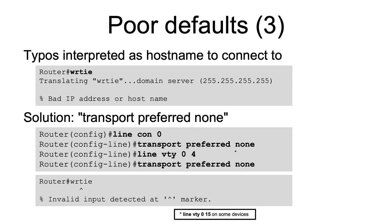The third Cisco default that we'll be talking about is that typos are interpreted as host names to connect to. A very common one that happens is if you try to type 'write' and you accidentally type 'wrtie'. What happens is Cisco would try to translate 'wrtie' to a host name using the domain server 255.255.255.255, and of course it will return 'bad IP address' or host name. This also happens when you have a proper DNS server configured as well.